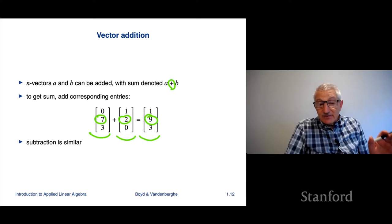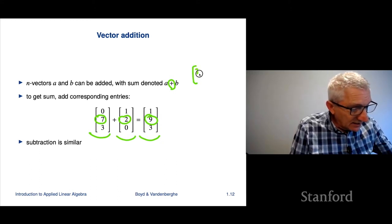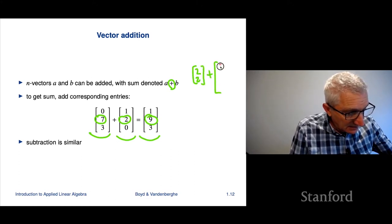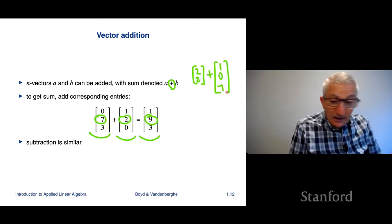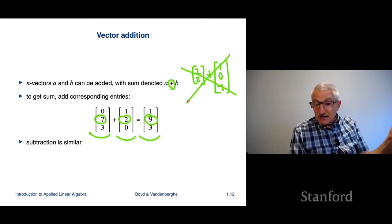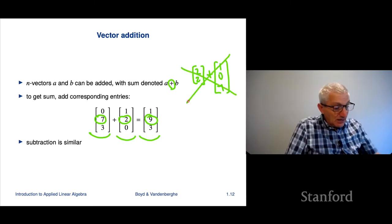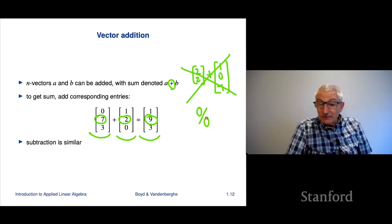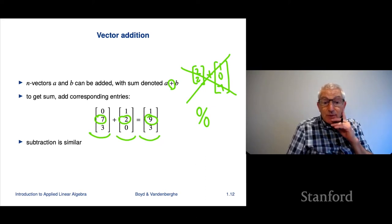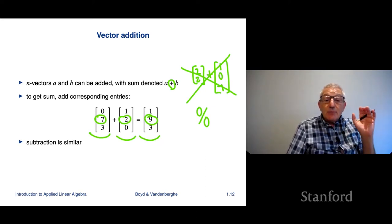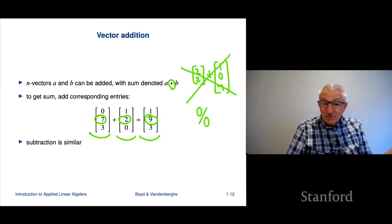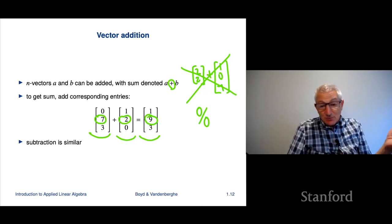You cannot add vectors of different sizes. If you attempt to add vectors of different sizes, the answer is it has absolutely no meaning — you might as well write something like 0 divided by 0. That's an important thing to remember. All languages that support vectors will allow you to add them, and very often it's just a simple plus.